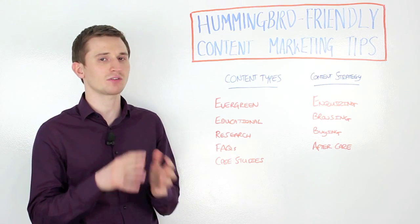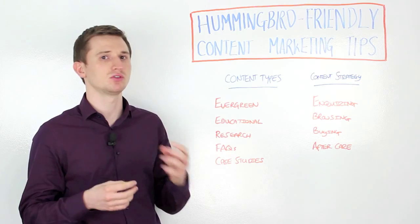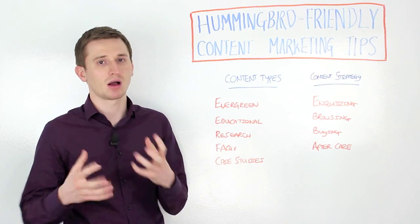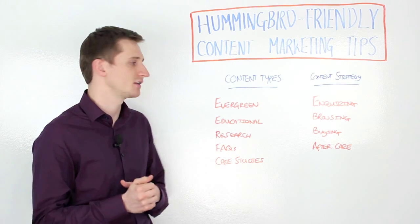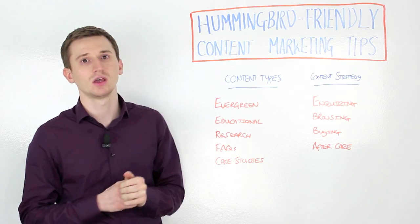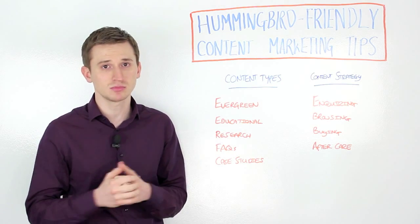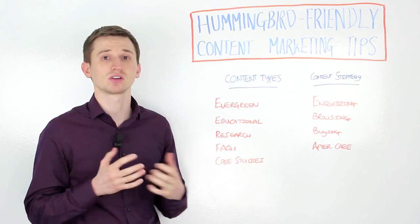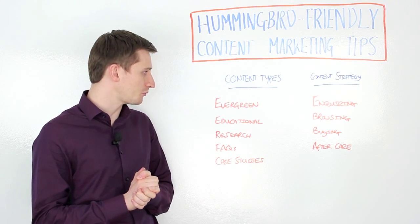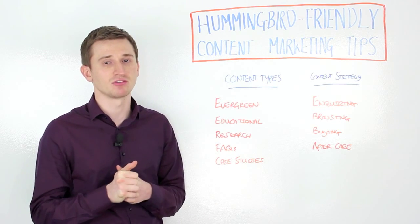The crucial point with evergreen content is that it's something that addresses an ongoing issue in your industry and sector — it doesn't have to be company-specific. This gives Google context about the content you've created. This moves nicely onto educational content, because educational content provides solutions to problems and answers to queries and questions. It's a natural extension of that evergreen content.